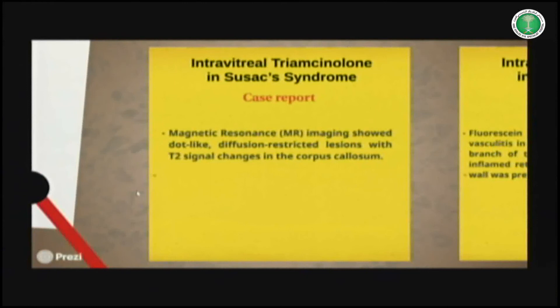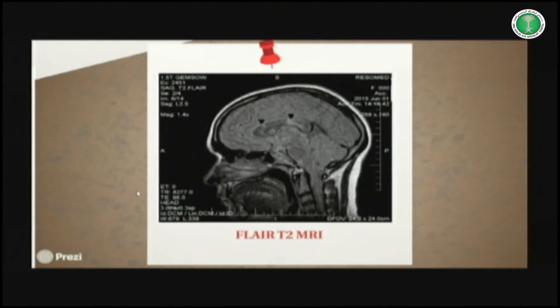It's very important that MRI be performed. When we suspect the patient has Susack syndrome, it's very important to focus on the corpus callosum, because as you can see here, in the corpus callosum there is a finding described in a neuroradiology paper by Dr. San — this finding is seen only in patients with Susack syndrome. It's very important because multiple sclerosis does not present this finding.